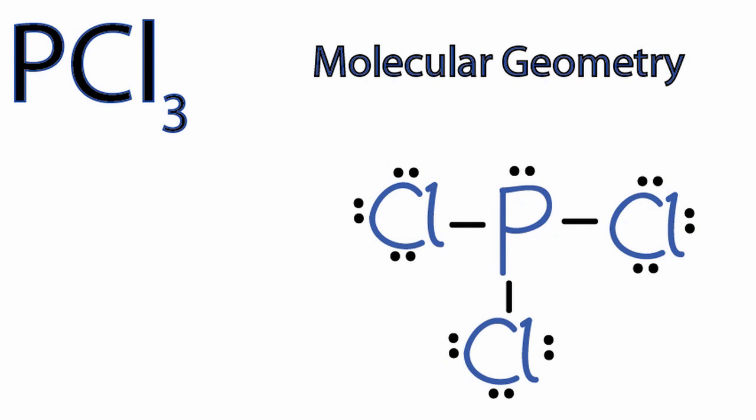Okay, so we're looking at PCl3 and we're trying to figure out the molecular geometry. We have a Lewis structure here, and that gives us an idea of the two-dimensional structure where the electrons are, where the bonds are, but it doesn't tell us the shape.